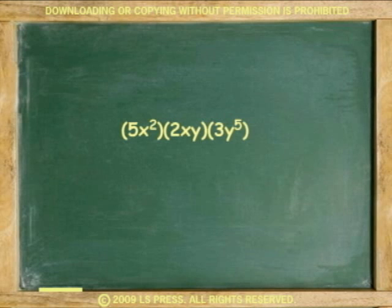Another example. In here, multiplying the coefficients 5 times 2 times 3 produces an answer of 30. Adding the exponents 2 plus 1 equals 3 gives you the exponent for x.